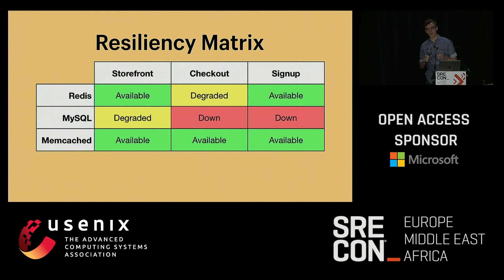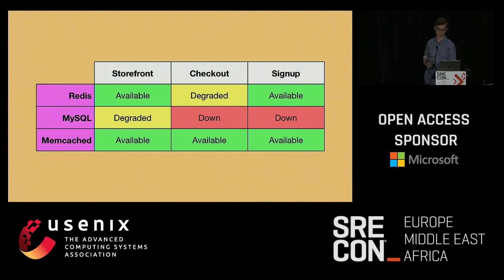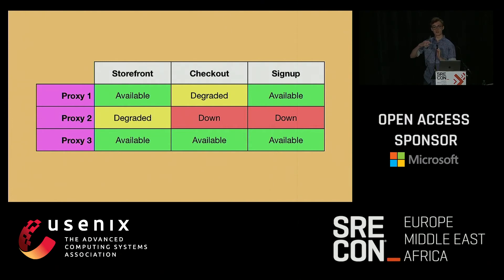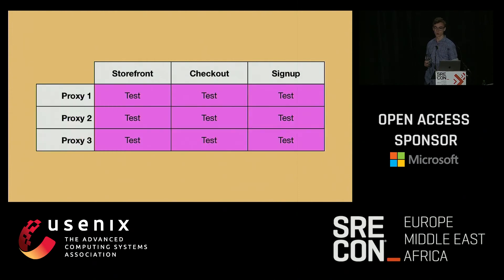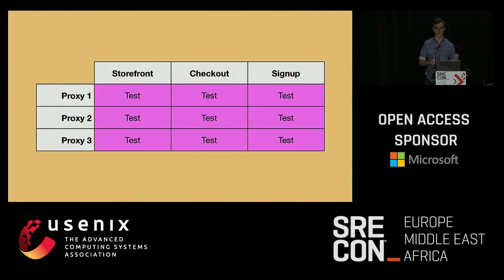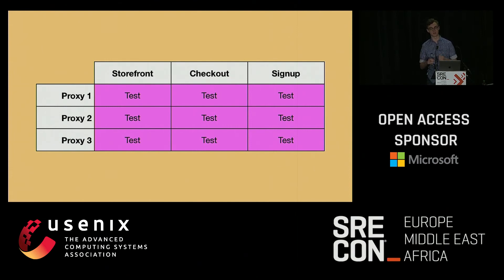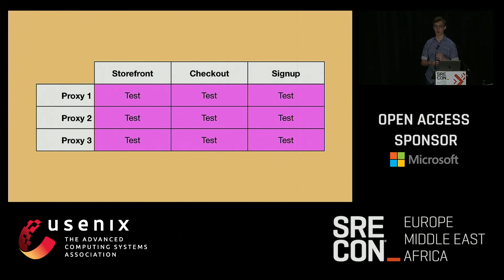If we fit Toxiproxy back into the resiliency matrix — all these services on the left that can fail — we put a Toxiproxy proxy between those services and our application. Then at each intersection of a feature and one of these proxies, we write tests. We say, cause a failure with this proxy — for example proxy two is for MySQL — cause a failure with MySQL, and then assert behavior about the checkout feature. Maybe you want some sort of degraded checkout behavior rather than a complete failure.